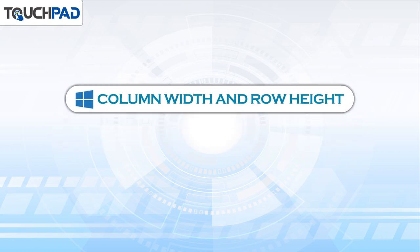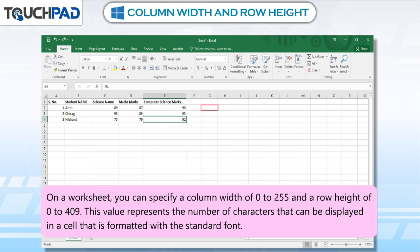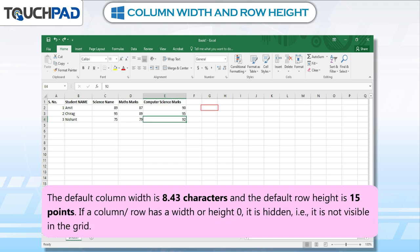Column Width and Row Height. On a worksheet, you can specify a column width of 0 to 255 and a row height of 0 to 409. This value represents the number of characters that can be displayed in a cell that is formatted with the standard font. The default column width is 8.43 characters and the default row height is 15 points. If a column or row has a width or height of 0, it is hidden — that is, it is not visible in the grid.